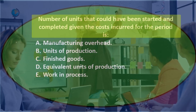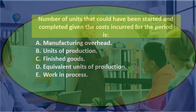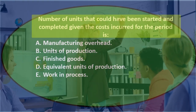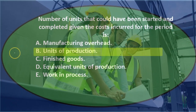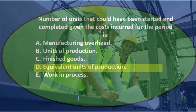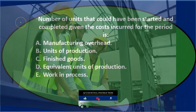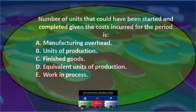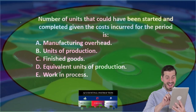Next question: the number of units that could have been started and completed given the costs incurred for the period is: A) manufacturing overhead, B) units of production, C) finished goods, D) equivalent units of production, and E) work in process. Let's go through that using the process of elimination.